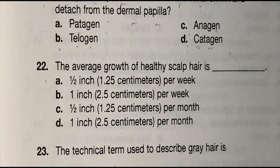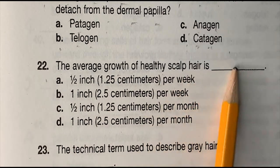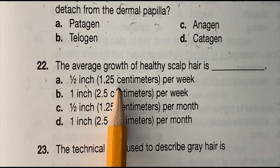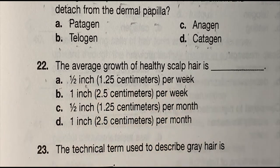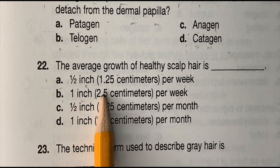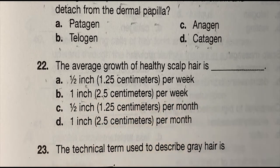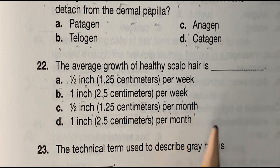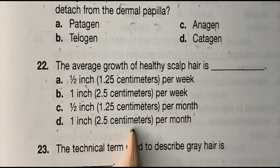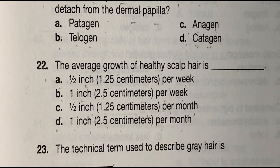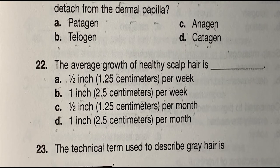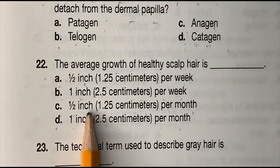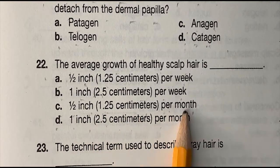Number 22: the average growth of healthy scalp hair is blank — (a) half an inch (1.25 cm) per week, (b) one inch (2.5 cm) per week, (c) half an inch (1.25 cm) per month, or (d) one inch (2.5 cm) per month. The correct answer is (c) half an inch (1.25 cm) per month.